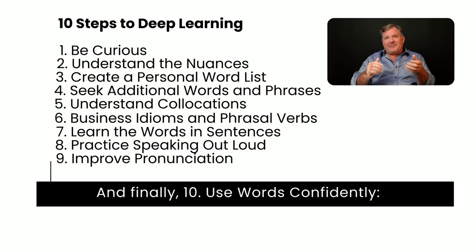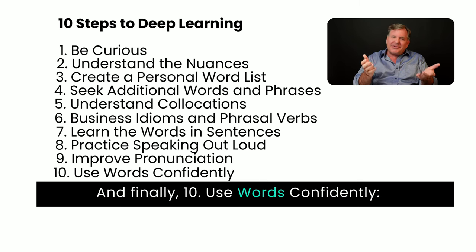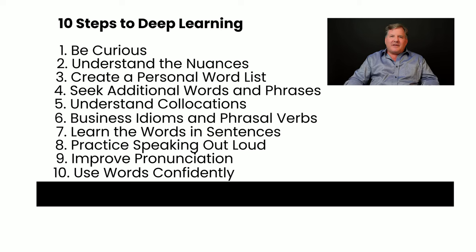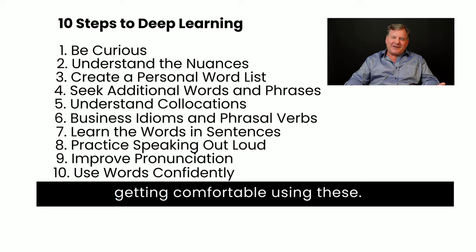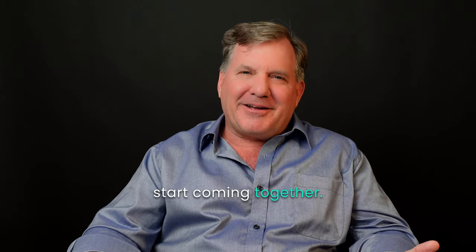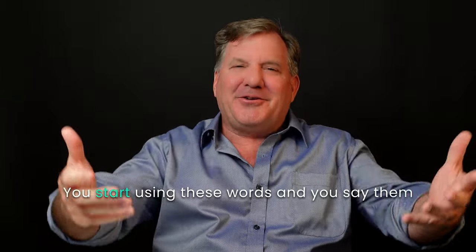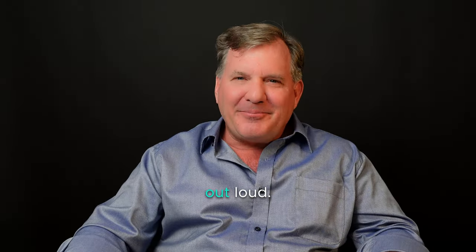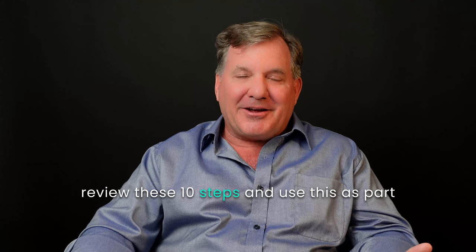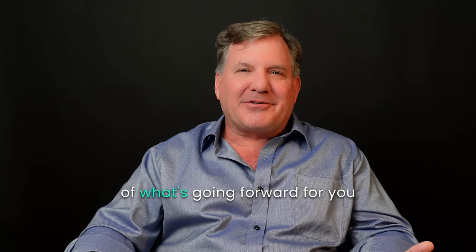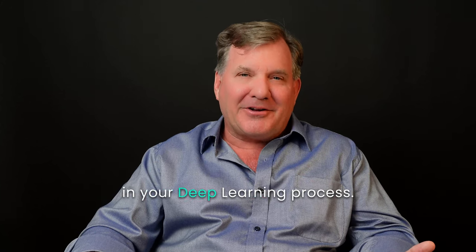And finally, number 10: use words confidently. This is a big key. Where you can make your own sentences using these new vocabulary words — that's when you really start getting comfortable using these. So you put these 10 steps together and everything can really start coming together. You start using these words and say them out loud. It's really important to review these 10 steps and use them as part of your deep learning process.